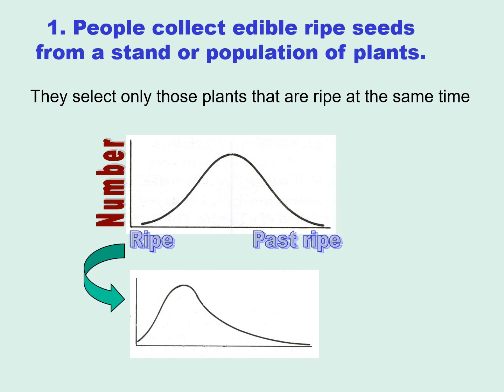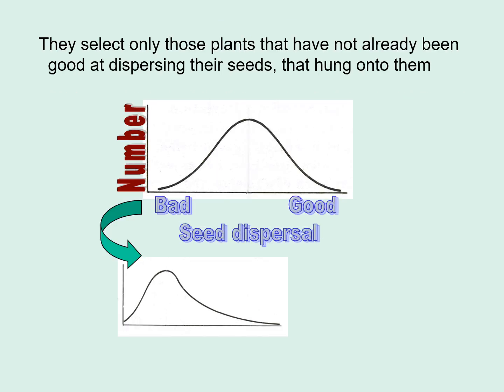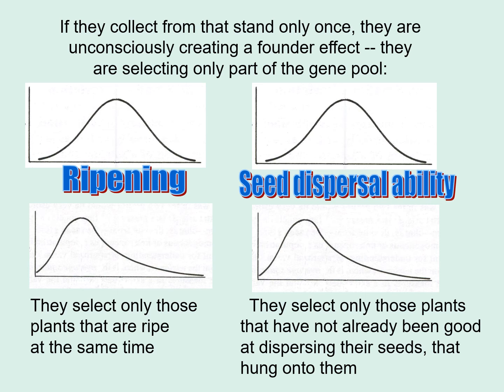If people collect edible ripe seeds from a standard population of plants just once, they are selecting a small portion of the gene pool. Instead of getting the entire bell-shaped curve of not-yet-ripe, ripe-now, and past-ripe, you're getting only those that are ripe right now. So you have reduced the gene pool to plants that ripen at the same time. And if you select only those plants that have not already dispersed their seed — that hung onto their seeds — you have also reduced the gene pool to just those that didn't have brittle rachises. Collecting from that stand only once, you're unconsciously creating a founder effect, selecting only part of the gene pool.